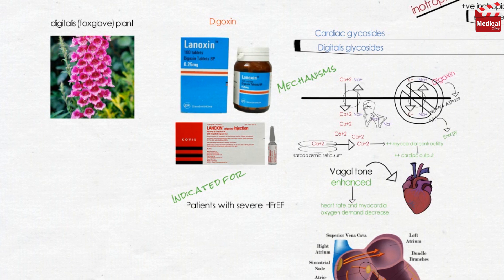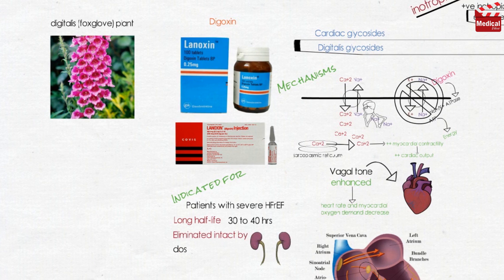Digoxin is available in oral and injectable formulations. It has a long half-life of 30 to 40 hours. It is mainly eliminated intact by the kidney, requiring dose adjustment in renal dysfunction.